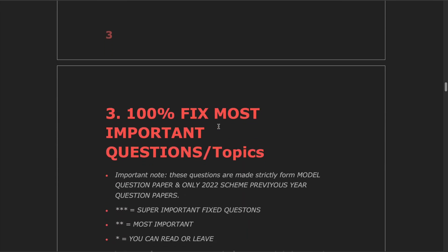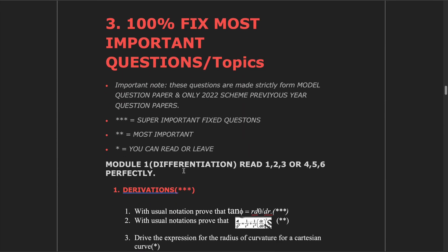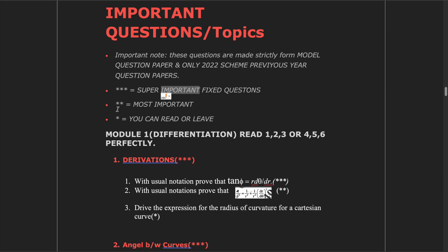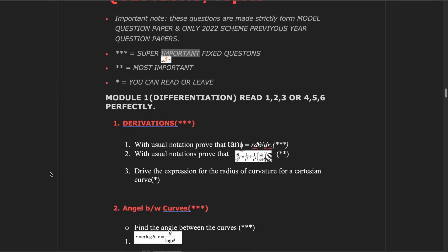Thirdly, 100% fixed most important questions. These questions are strictly made from the model question paper and the 2022 scheme previous question papers only — not all previous question papers, because different schemes have different syllabi. Your scheme is the 2022 scheme. Where there are three stars it is super important, two stars is most important, and one star is normal.